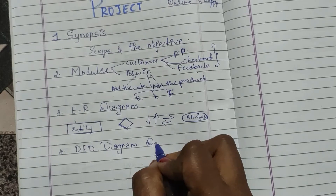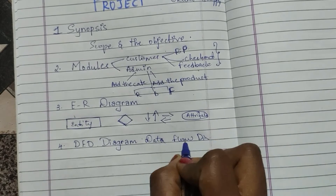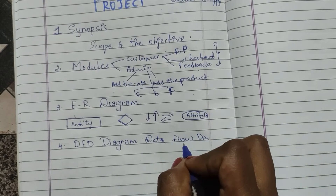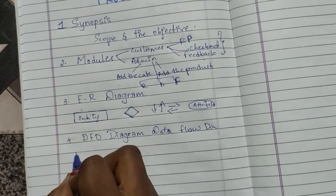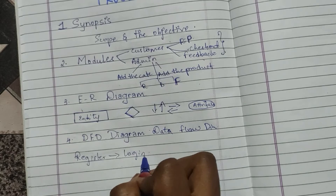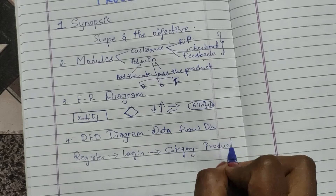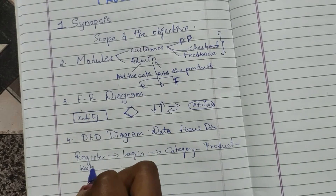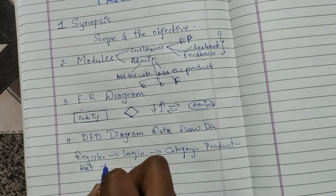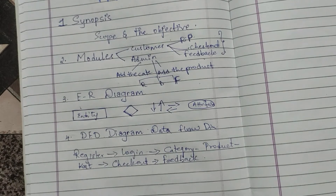DFD stands for Data Flow Diagram. This shows how your project flows. For example, in online shopping: first there is a register page, then login, then view category, then products, then add to cart (optional), then checkout, and finally feedback if the user wishes. This is your data flow — how your project processes data.